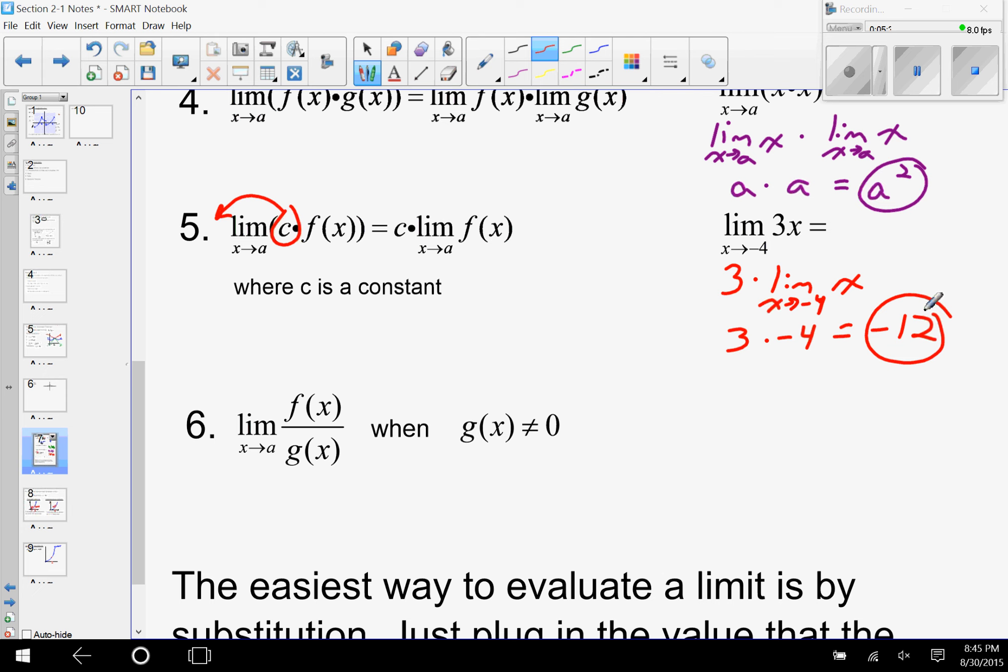The last property here is the quotient property for limits. This one honestly doesn't get used very much. But it's the idea that as long as my denominator is not zero, then the limit of a quotient would be the limit as x approaches a of f(x) over the limit as x approaches a of g(x).